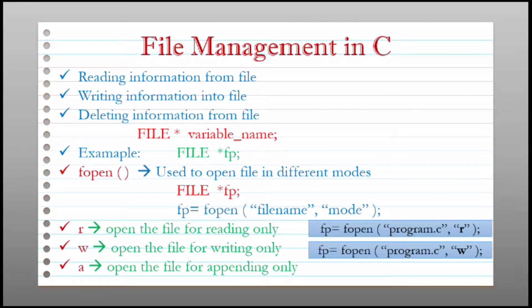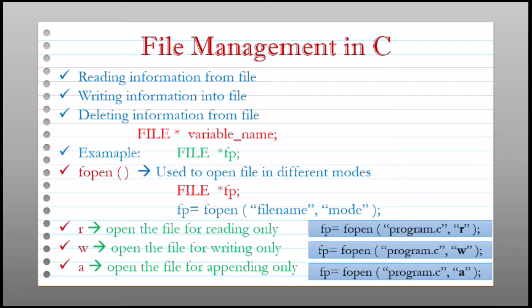The next mode is a. "a" opens the file for appending data to it. Appending means adding data to a file. When we use w as the mode it deletes the previous content present in the file and writes new content, whereas when we use a as the mode it does not delete the previous content — the content remains as it is and the new content is written after the previous content. In the example you can see the mode is a, meaning you can add extra content to the file program.c.